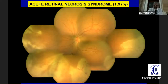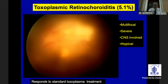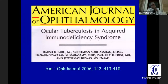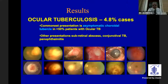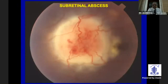Acute retinal necrosis can occur very rarely in HIV-positive patients and the treatment is not different. Toxoplasmic retinochoroiditis is a little different from that in immunocompetent patients — it can be multifocal, diffuse, and produce disseminated lesions. The response to standard therapy is generally good, as shown by healed scars after treatment. Ocular tuberculosis is quite unique in our country in HIV-positive patients — we described this in the American Journal of Ophthalmology in 2006. It can have a myriad of presentations, from a small tubercle to a subretinal abscess or even panophthalmitis or conjunctival tuberculoma. Prognosis is not good if not treated urgently.